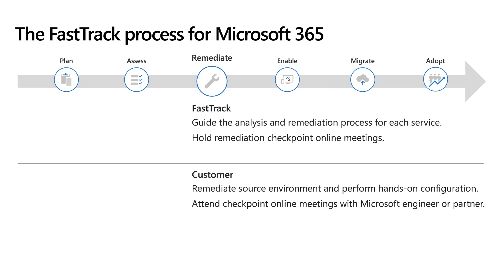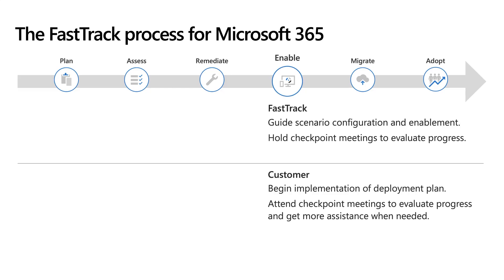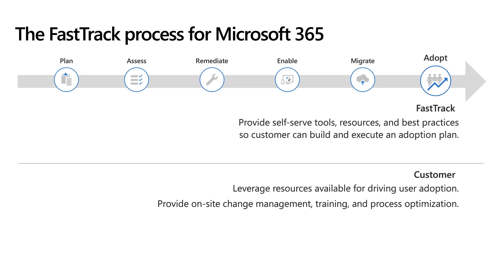During the remediation phase, FastTrack guides the analysis and remediation for each service and holds checkpoint meetings along the way, while customers remediate the source environment and perform hands-on configuration. In the enable phase, FastTrack guides scenario configuration and enablement, while customers begin implementing their deployment plan. During the migrate phase, FastTrack provides guidance to tenants with fewer than 500 licenses and performs data migrations for customers with more than 500 licenses. Throughout this process, FastTrack provides self-serve tools, resources, and best practices to help customers build and execute their adoption plan.